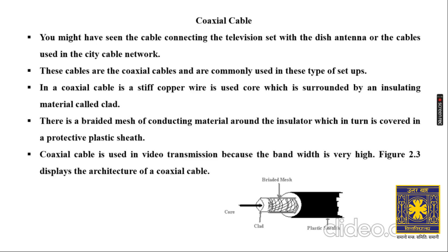Coaxial cable has a stiff copper wire as its core, which is surrounded by an insulating material called clad. Around the insulator there is a braided mesh of conducting material, which is in turn covered by a protective plastic sheath. So there are two conducting materials — the core and the braided mesh — and two insulators: the clad and the plastic sheath.